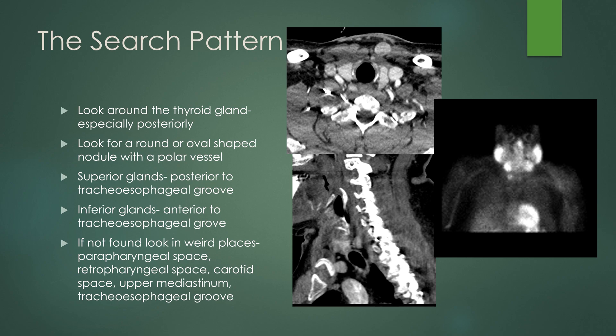When you have adenomas, you can use that as a general rule of thumb. If you don't find it in a patient with known hypercalcemia and hyperparathyroidism, look in some unusual places: check the parapharyngeal space, the retropharyngeal space, the carotid space, the upper mediastinum, and the tracheoesophageal groove.